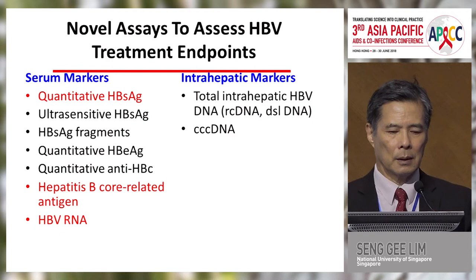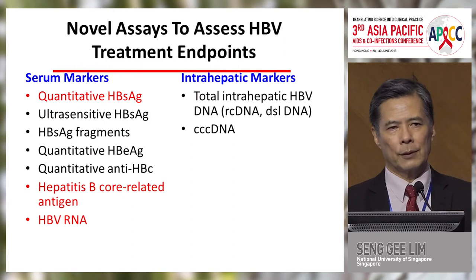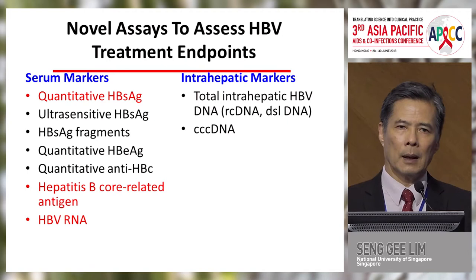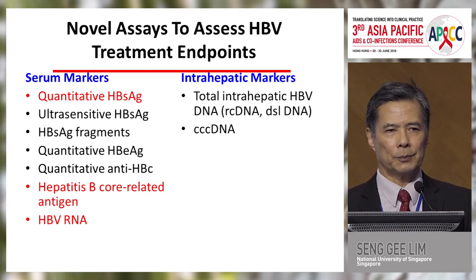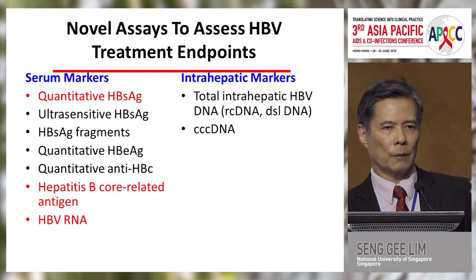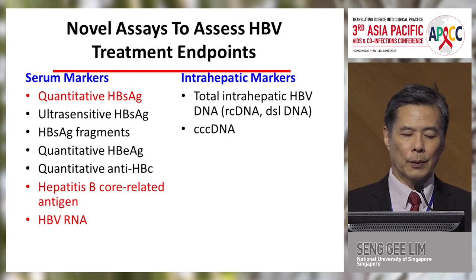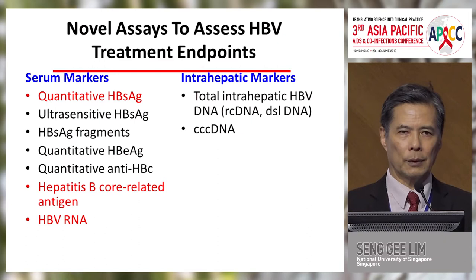I've highlighted in red three novel assays of interest: hepatitis B core-related antigen (HBcrAg) and HBV RNA. HBcrAg is composed of three different components: e-antigen, P22, and an antigen related to the core region of hepatitis B. The trouble is they're not exactly sure what HBcrAg measures — it could be more dominant on one antigen versus another in different situations. This assay was produced in Japan, and there's quite a lot of data suggesting it does have some correlation to treatment response.